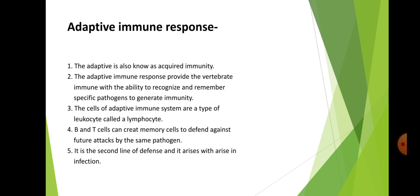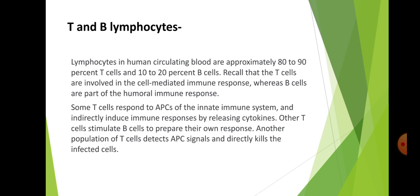Adaptive defense includes humoral immunity involving B cells and cellular immunity involving T cells. In human circulating blood, T cells make up approximately 80 to 90 percent of lymphocytes and B cells make up 10 to 20 percent. T cells are involved in the cell-mediated immune response, whereas B cells are part of the humoral immune response.